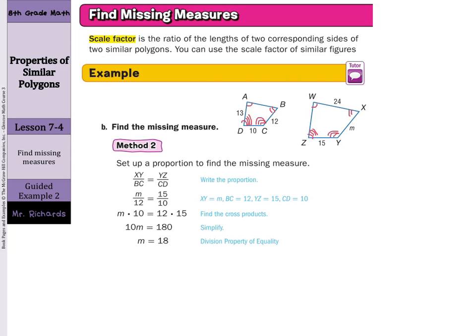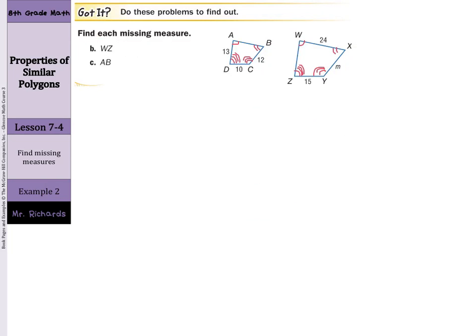So now it's going to come time to find the missing measure. Our first one is WZ, and let's use the scale factor method. I want to take a side from ABCD, and I want to go to WXYZ. I am looking for WZ, and the matching side is AD.